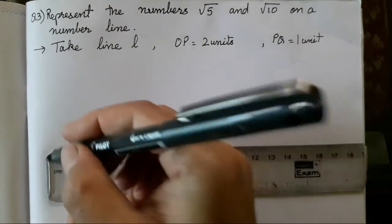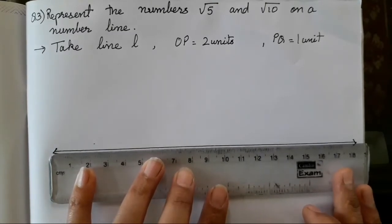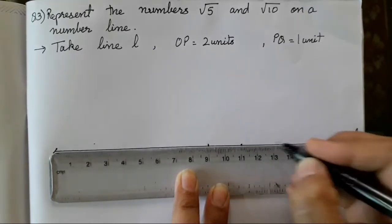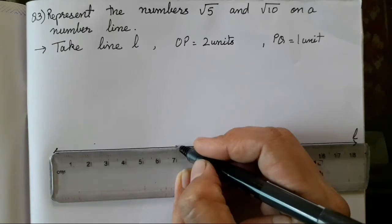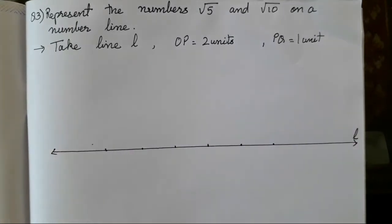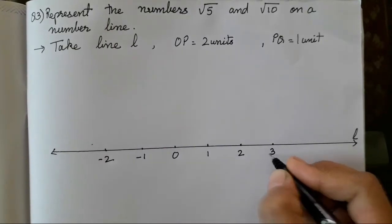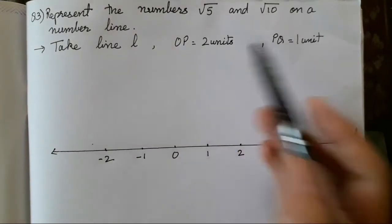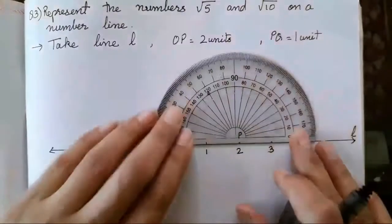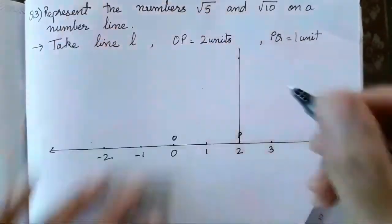Draw a number line — this question we have done last year as well, so we complete it the same way. We take line L. OP is 2 units, meaning the distance between the two points is 2 units. Let's mark 0, minus 1, minus 2, 1, 2, and 3. O is at 0 and P is at 2. From point P, draw a perpendicular line at 90 degrees. Then take PQ which is 1 unit — that is half of the 2 unit distance — and draw an arc.